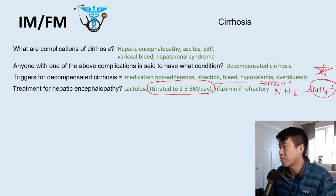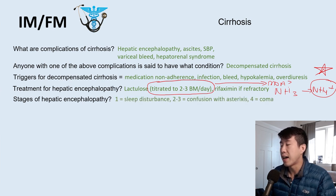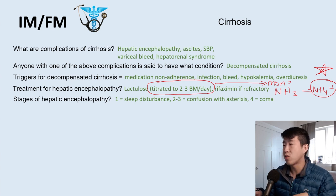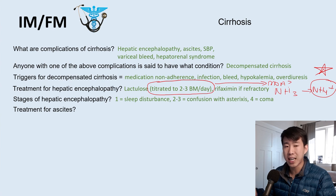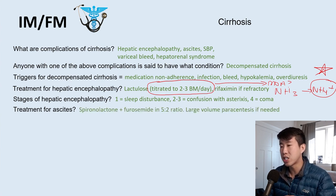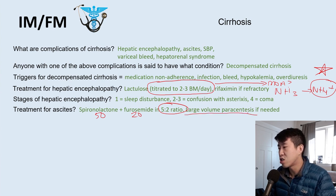Stages of hepatic encephalopathy: stage one is sleep disturbance; stages two to three involve asterixis and confusion; stage four is basically comatose. For ascites treatment, we use spironolactone and furosemide in a 5-to-2 ratio — an important ratio to know. For example, 50 mg spironolactone and 20 mg Lasix. Procedurally, we can do a large-volume paracentesis if a patient is very distended and symptomatic.